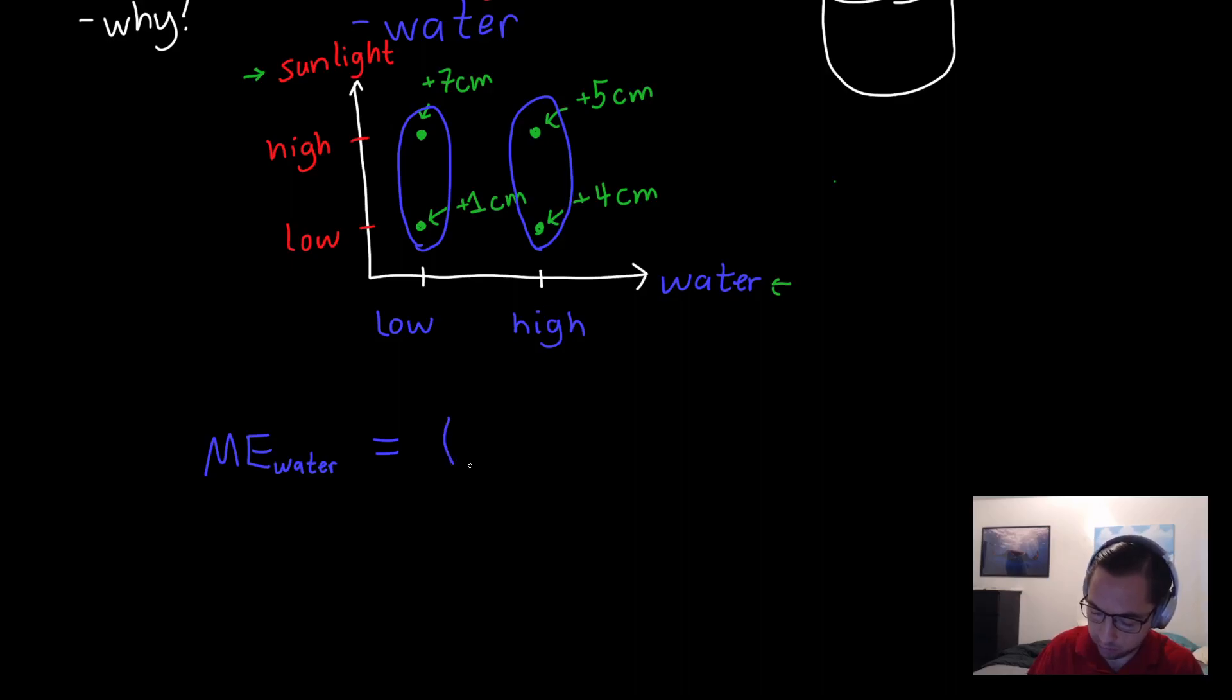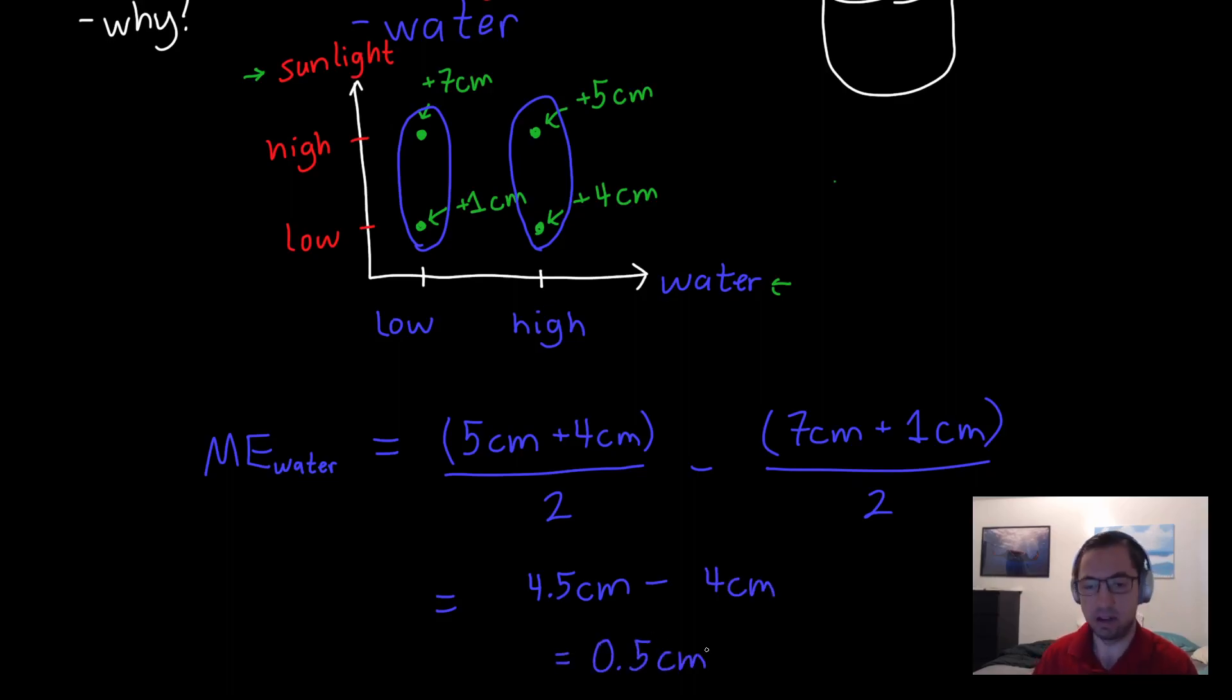So here we have, looks like five centimeters plus four centimeters over two, that's our average for the high water experiment, minus seven centimeters plus one centimeter over two. And so that is 4.5 centimeters minus four centimeters or 0.5 centimeters. So this is the average effect of changing the watering conditions on the cactus from low to high. So it's not huge, it's relatively small.